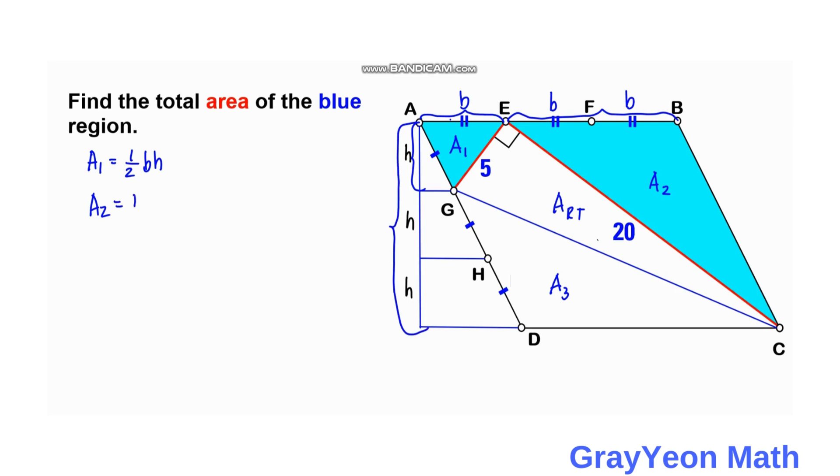So area 2 is 1 half times 2b times 3h. And we can cancel this. So area 2 is equal to 3bh.